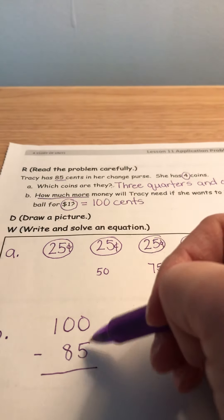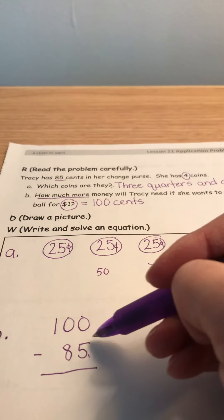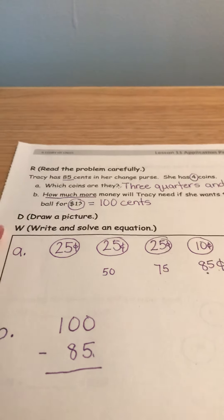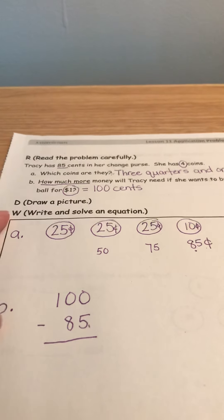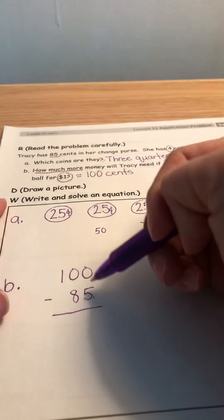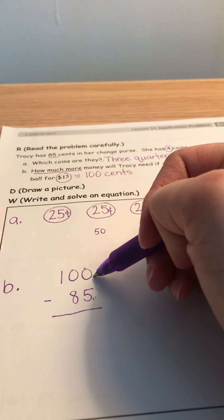So now I just need to subtract 85 from 100 and then I will know how many more cents I need. Can I take five from zero? No, I can't, right?